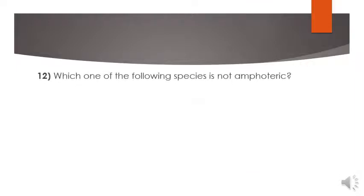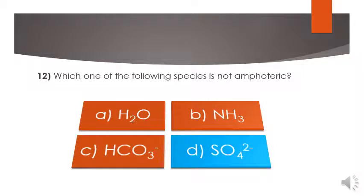MCQ number 12: which one of the following species is not amphoteric? Water, ammonia, HCO3 negative, or SO4 2 negative. Water, ammonia, and carbonate ion are amphoteric species. So SO4 2 negative is not amphoteric species. So D option is the correct option.